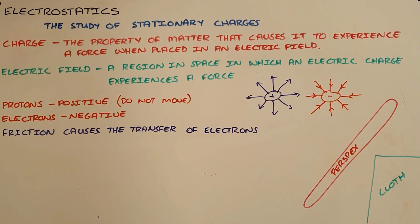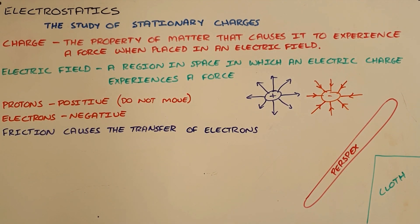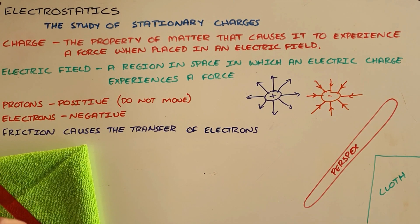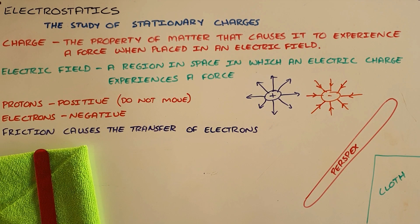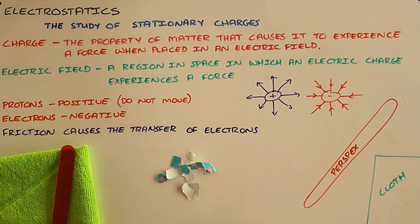We can demonstrate how friction causes a transfer of electrons or a transfer of charge with a very simple setup that has a cloth, a piece of perspex, which is just any normal ruler, and some small pieces of paper.